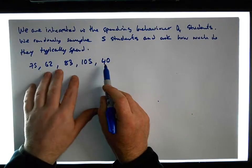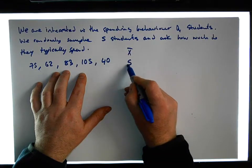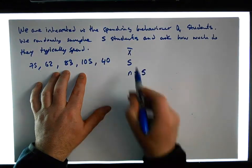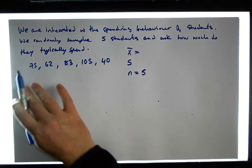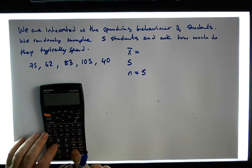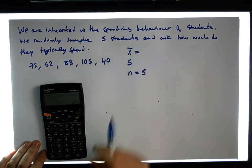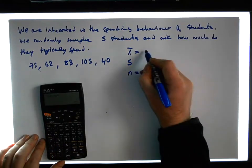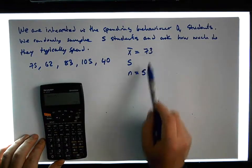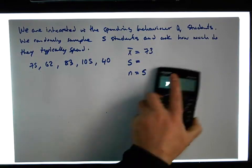We need to calculate the sample characteristics: the sample mean, the sample standard deviation, and the sample size. The sample size is straightforwardly five. The mean is the sum of those values divided by how many observations there are: 75 plus 62 plus 83 plus 105 plus 40 equals 365, divided by five gives a mean of 73 euros.